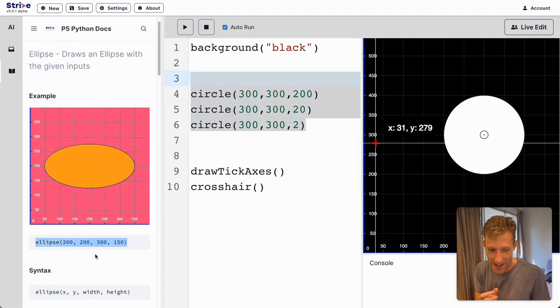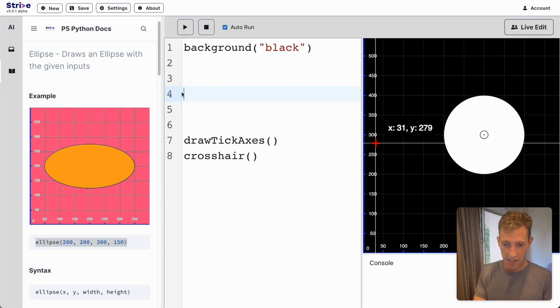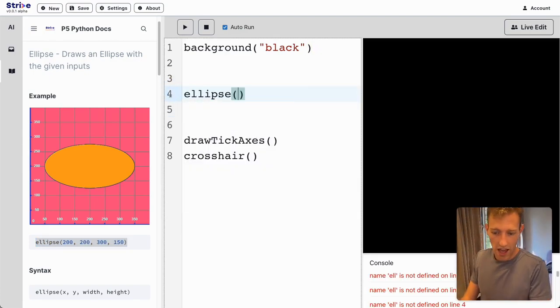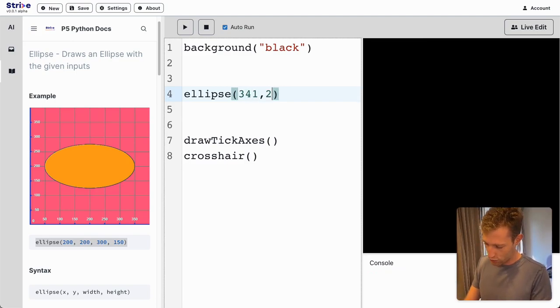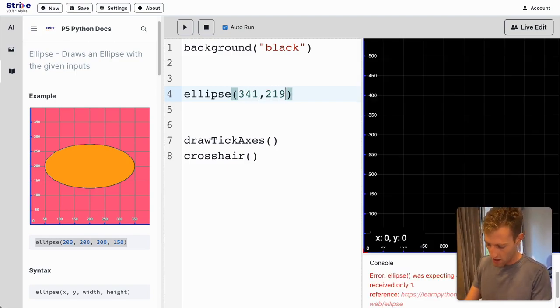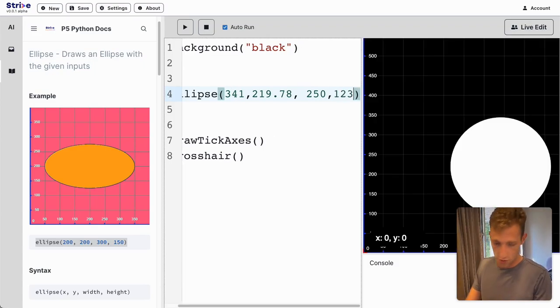Now, instead of a diameter, I'm going to specify its width—how far left to right it goes—and its height—how far up to down it goes. So I'll write: x is 341, y is 219.78, width is 250, and height is 123.